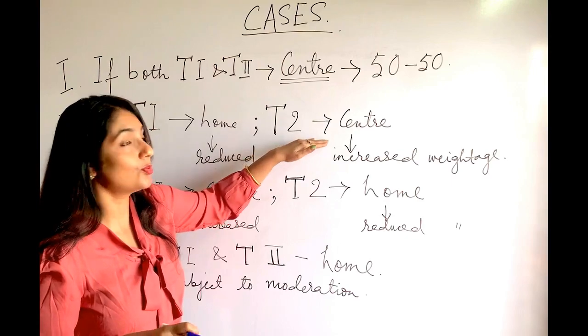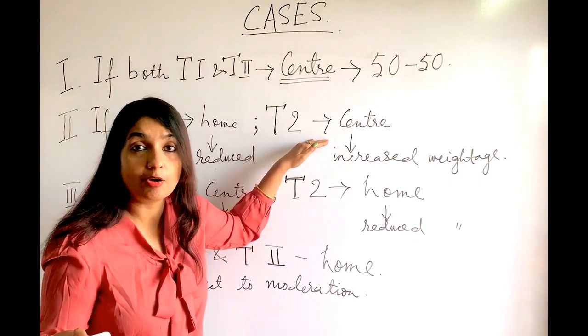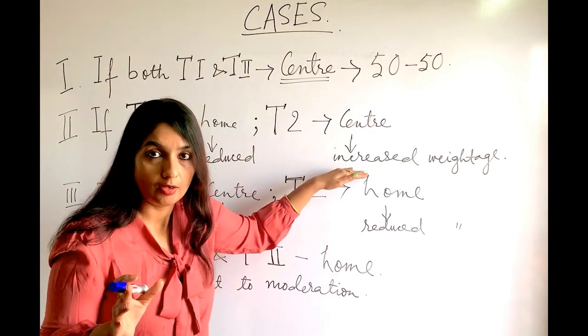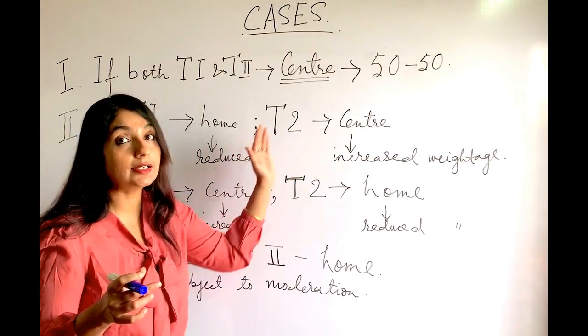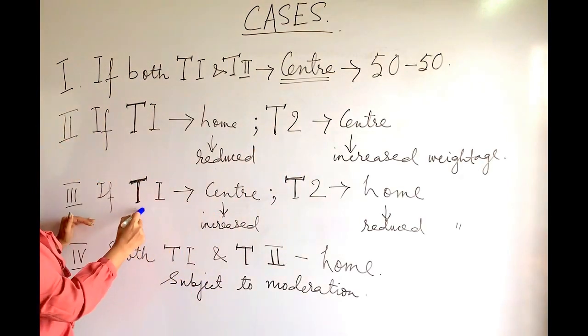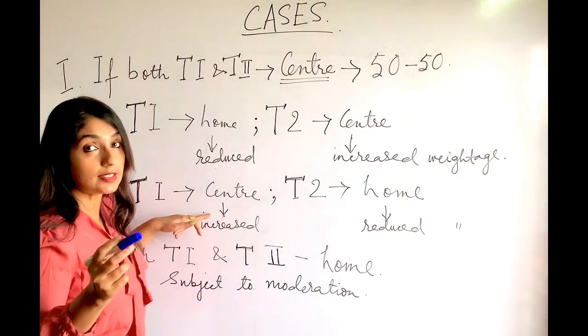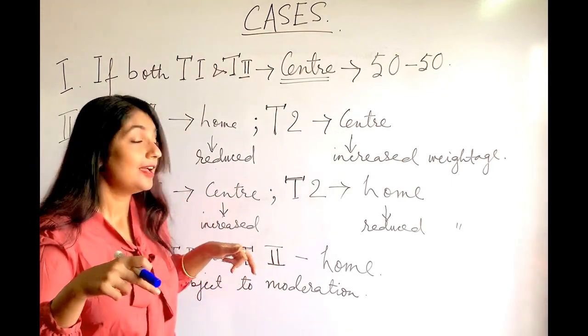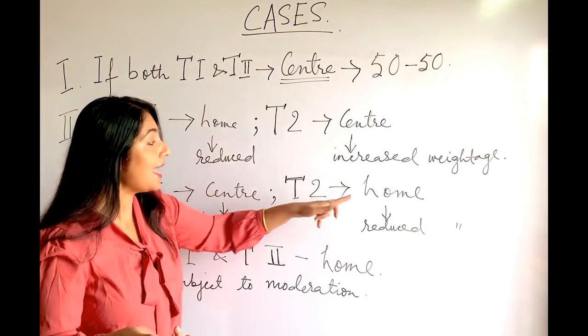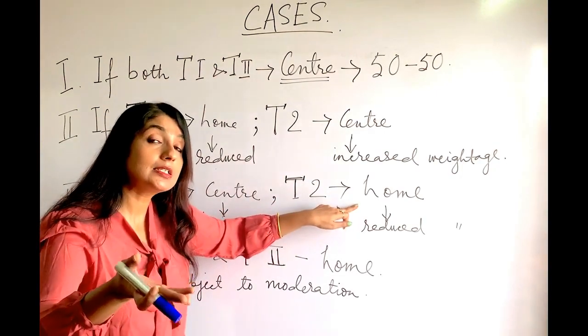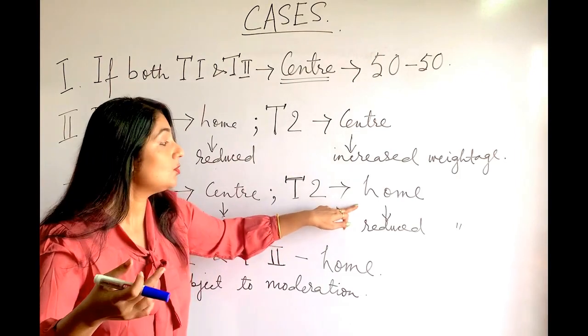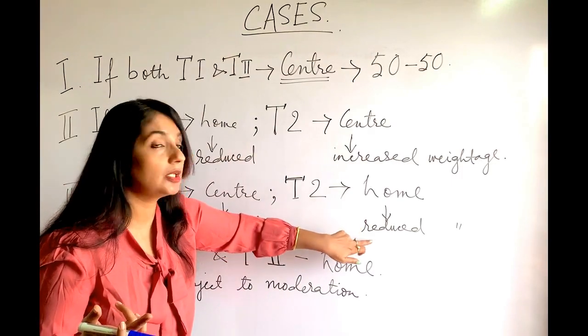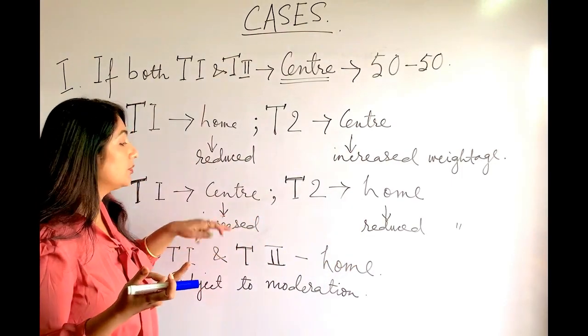Case 3: exactly the opposite. Suppose T1—Term 1, conducted in November-December of this year—you are taking from the center, and T2—Term 2 in 2022—you are taking from home online. Then the weightage of T2 will be reduced, and T1 will be increased. The exact percentage increase, which is the same as the decrease, CBSE will reveal later.